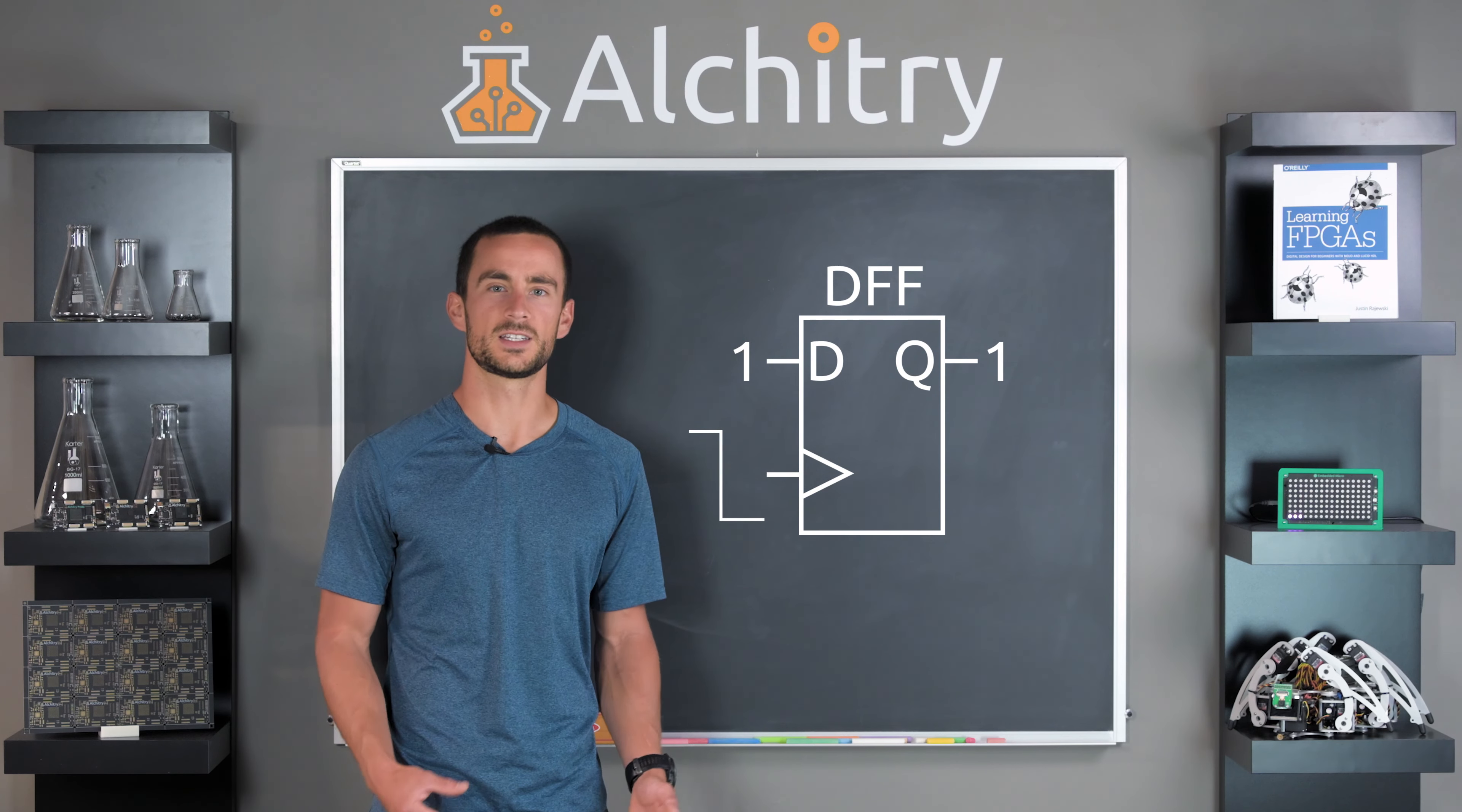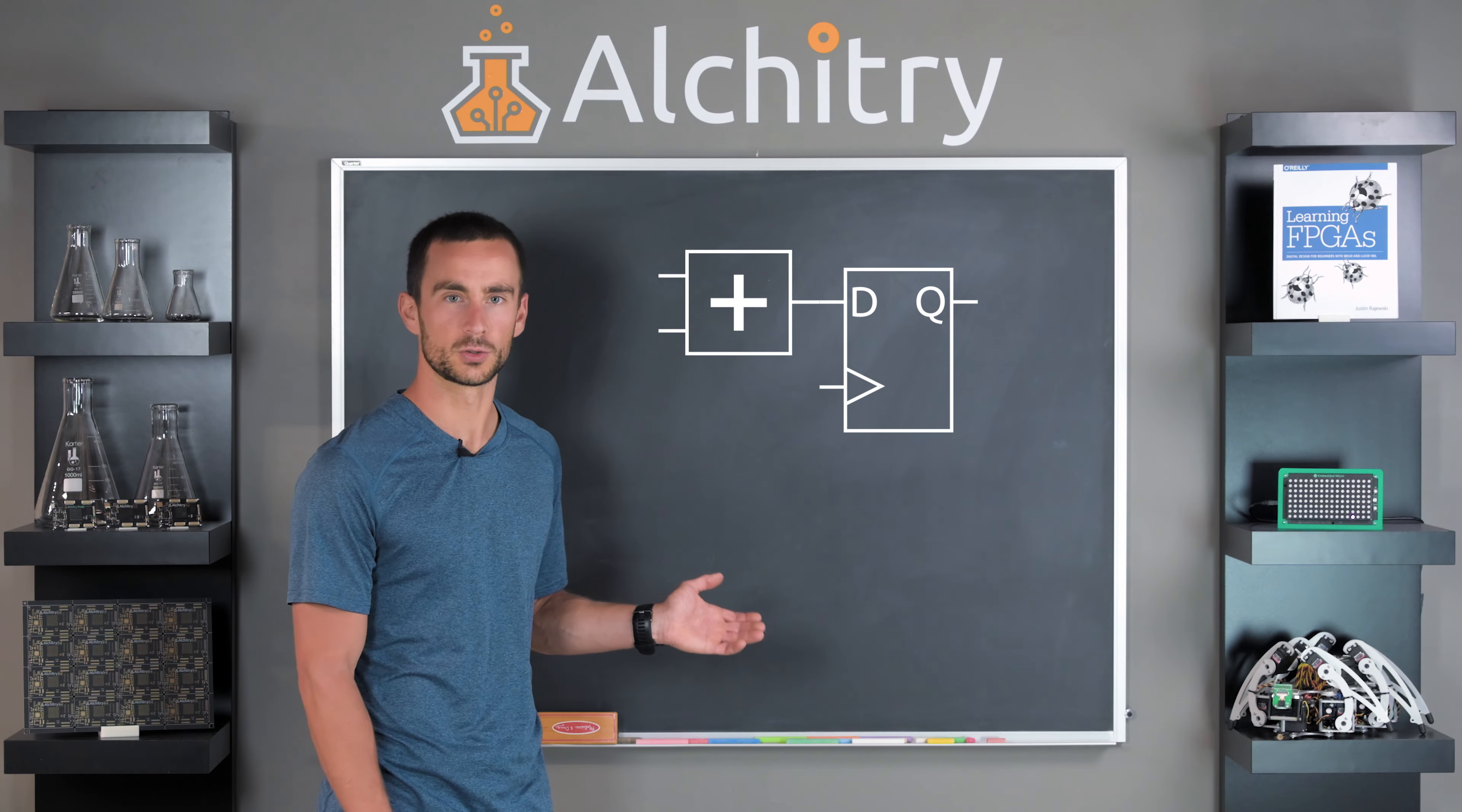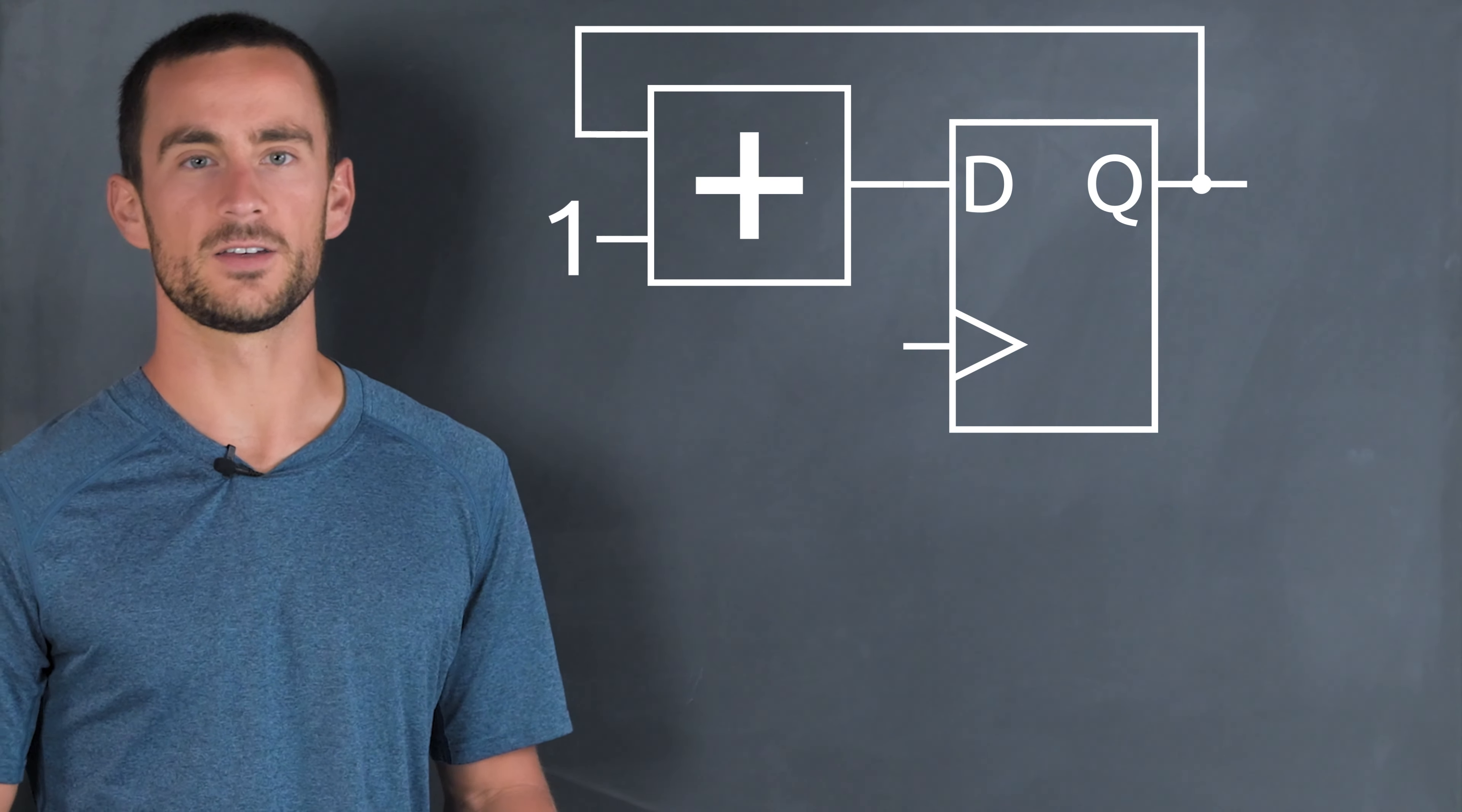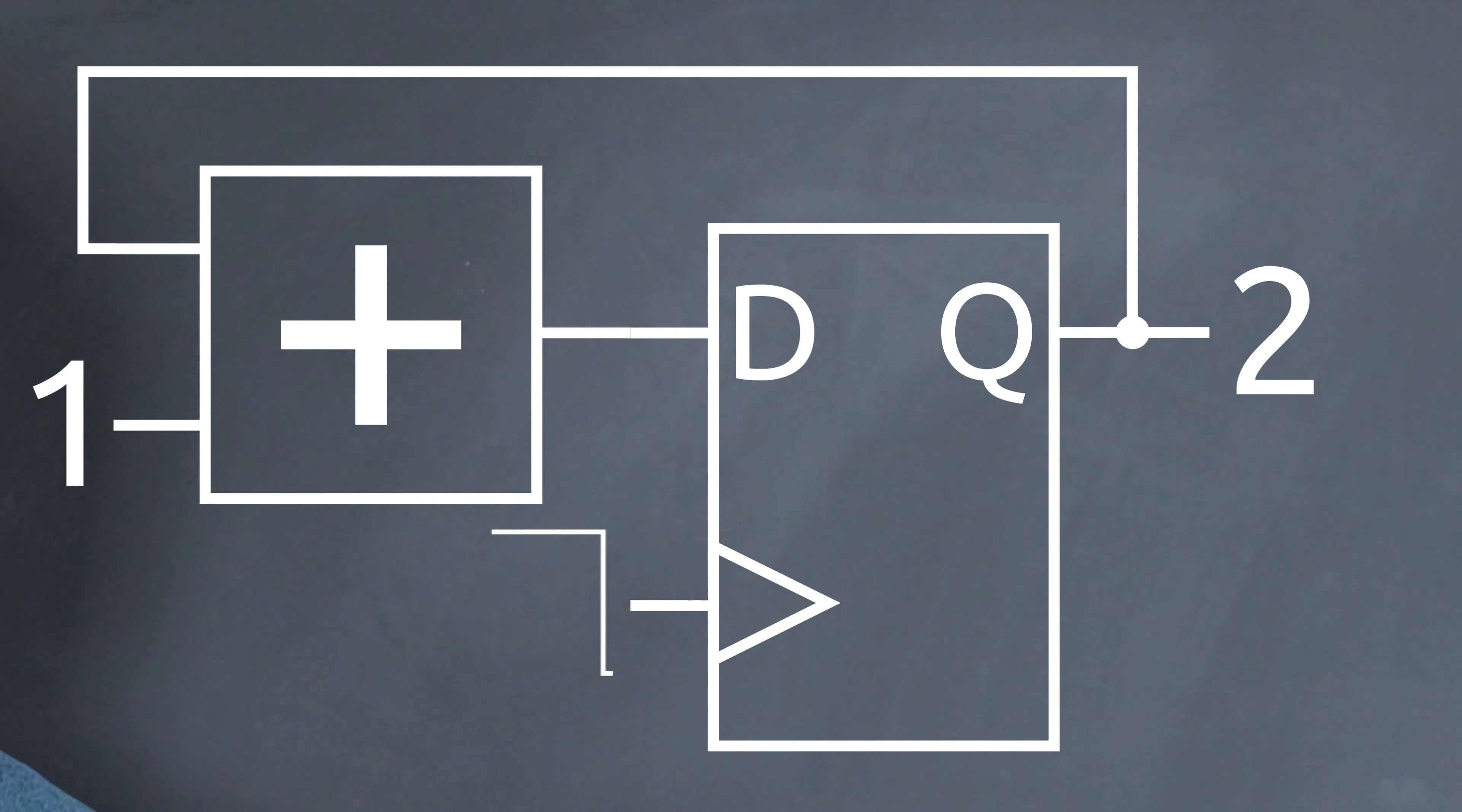Since the DFF is saving the value of D, it's actually a single bit of memory. We can use the DFF to keep the counter under control. If we use the output of the adder as the input to the DFF, and the DFF's output as the input to the adder, we can increment the value in a predictable way. We can control how fast the counter will go by adjusting the frequency of the clock. A faster clock means a faster counter.